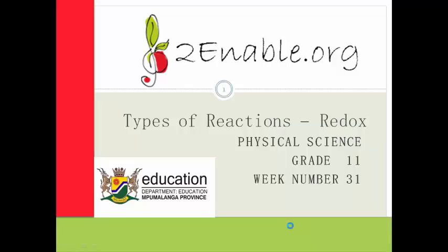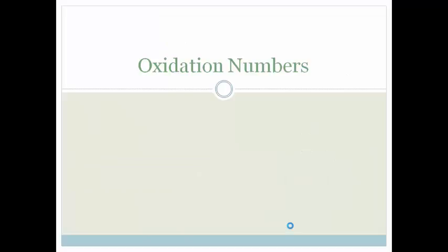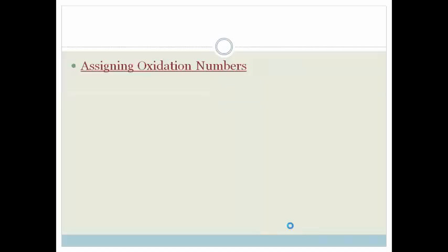Good day, Grade 11s. Welcome to this next lesson in redox reactions. In the last lesson, we basically covered what redox is — it's a combination of oxidation and reduction. But in order for us to understand redox and be able to calculate and work out the balanced equations of a reaction, we need to understand oxidation numbers. So let's learn a little bit more about oxidation numbers.